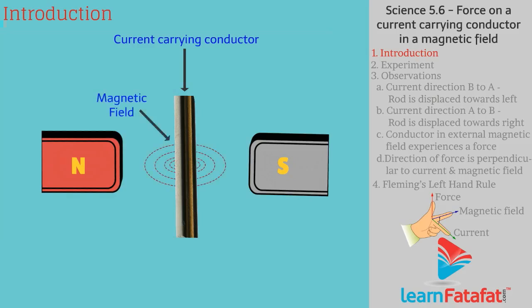Current carrying conductor produces magnetic field around it. This field exerts its magnetic force on the magnet placed near it.